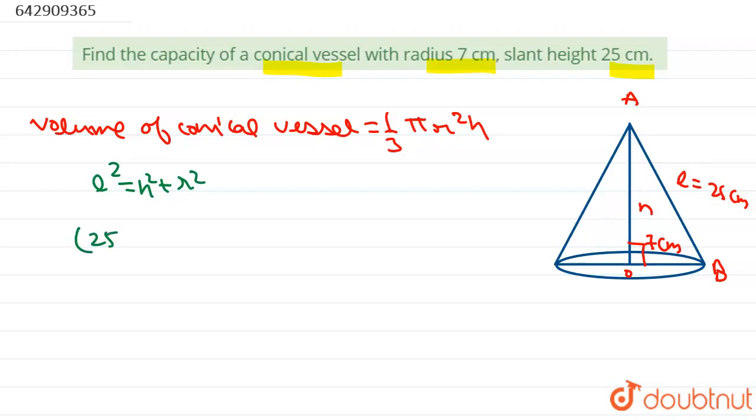L squared is given as 25. So 25 squared equals H squared plus radius given as 7. 625 minus 7 squared, which is 49, equals H squared.